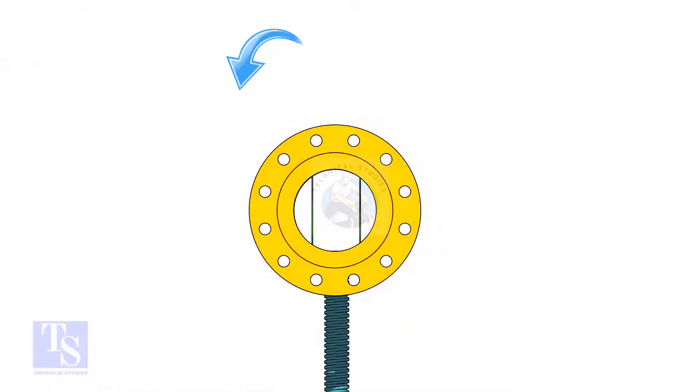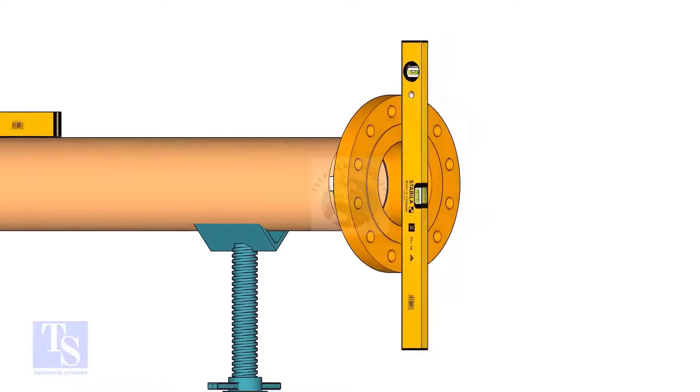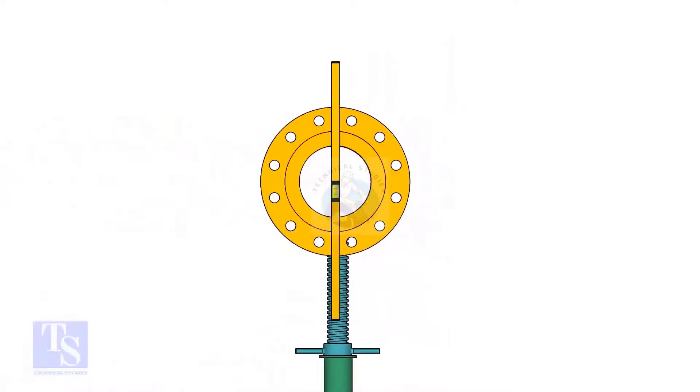Rotate the pipe and flange 90 degrees to either side. Check the vertical level of the flange. If correct, tack weld on the top side of the joint.